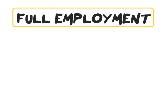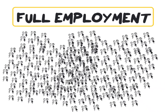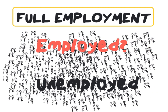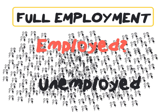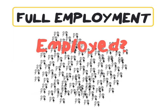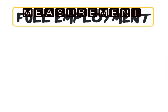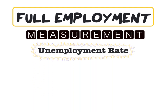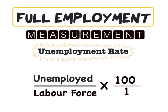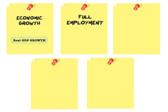Our second objective: full employment. Remember, we are not considering the entire population, only the labour force. In order to determine employment, we are going to use our labour force, where the unemployed are not part of our employed statistic. The remainder of our workforce are therefore the employed workers. In order to measure full employment, we will use the unemployment rate, which is: unemployed divided by the labour force, times 100. For more details on unemployment, please be sure to watch the previous explainer video. That concludes our second objective, full employment, measured by our unemployment rate.